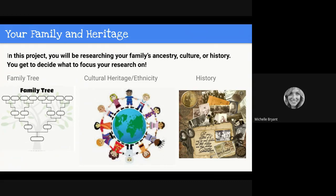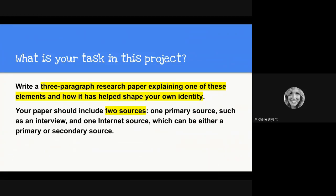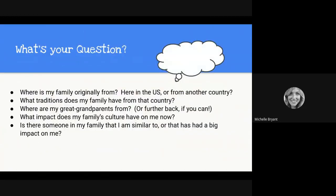You can find out what life was like for them growing up. Your task specifically in this project is to write a three-paragraph research paper — about one page — explaining one of these elements and how it has helped shape your own identity. You'll need at least two sources: one primary source, which ideally is an interview with a family member, and one internet or book source, which can be a primary or secondary source. Google will be your best friend in this project.